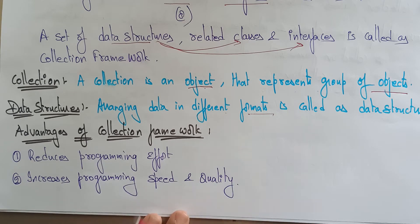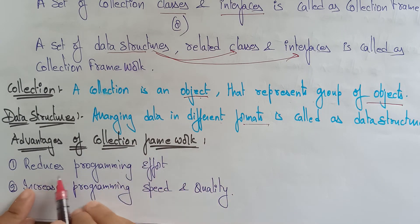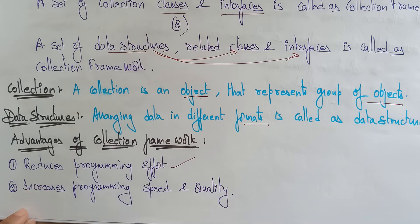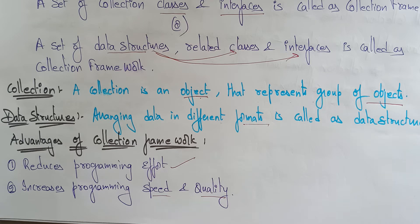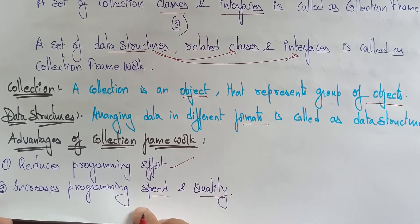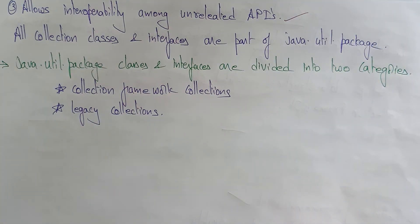What are the advantages of using the collection framework? Why are we using it in Java programming language? The collection framework reduces programming effort and increases programming speed as well as quality. While working on Java programs, whatever program we write should be fast and of good quality. Collection framework also allows interoperability among unrelated application interfaces, APIs.